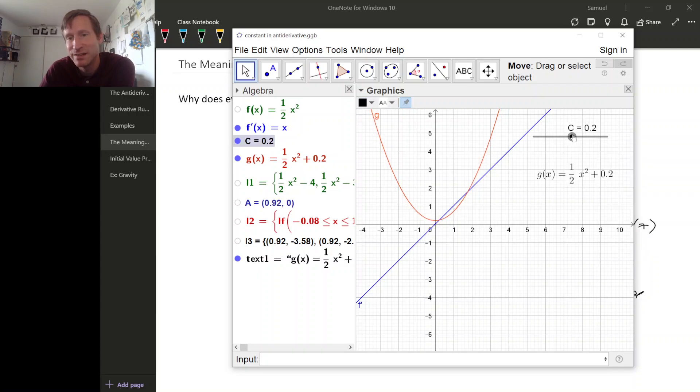Now at any given point, if you keep track of this spot right here at x equals 1, as we change C, the graph is just moving up and down. If the graph just moves up and down, does that change the slope of the tangent line at x equals 1?